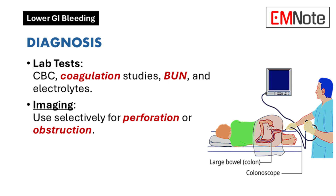Laboratory evaluation includes complete blood count, coagulation studies, and cross-matching for blood products. Additional tests such as blood urea nitrogen, creatinine, and electrolytes may provide supportive information. Imaging modalities, while often limited in value, may assist in specific scenarios such as suspected perforation or obstruction. Endoscopic or angiographic evaluation is generally tailored based on clinical needs and resource availability.